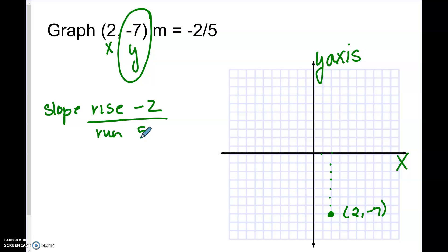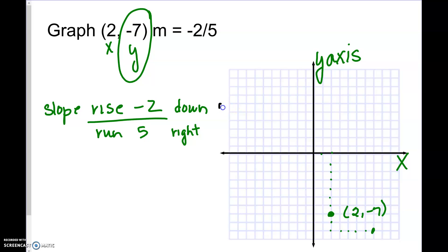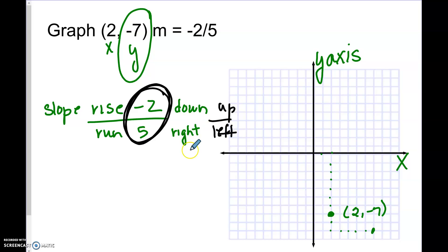There are two different ways to do this. Because the rise is negative two, we go down, and because the run is positive five, we go right. Going down two and right five takes us off the grid, so I like to go up instead. Because the whole number is negative, I go left — up and left is the opposite of down and right. So going up two and left five, then repeating, all of these points fall in a nice straight line.